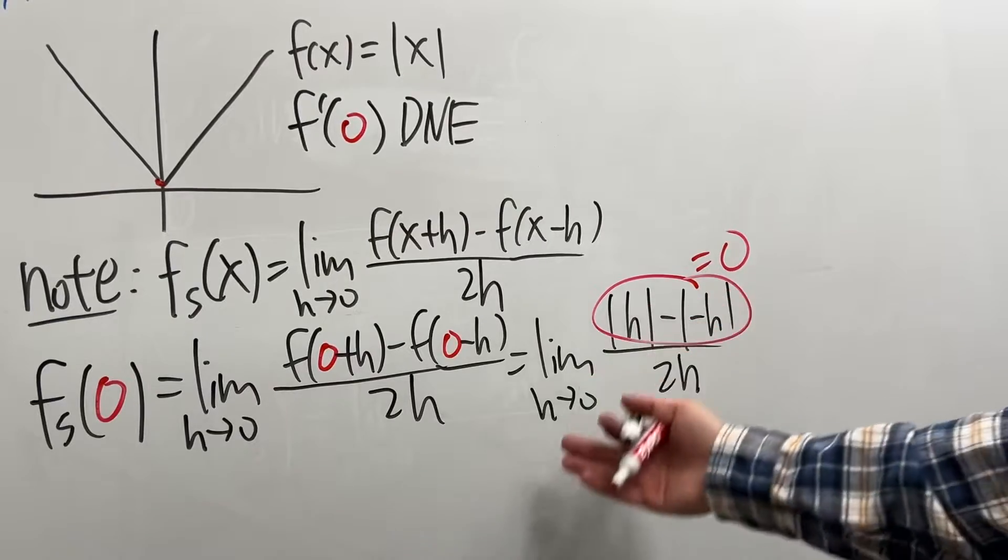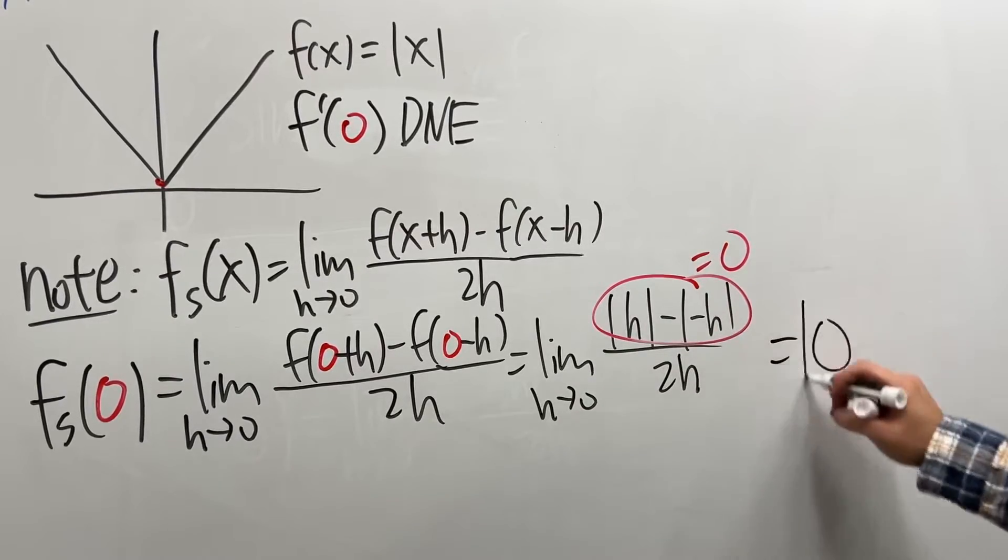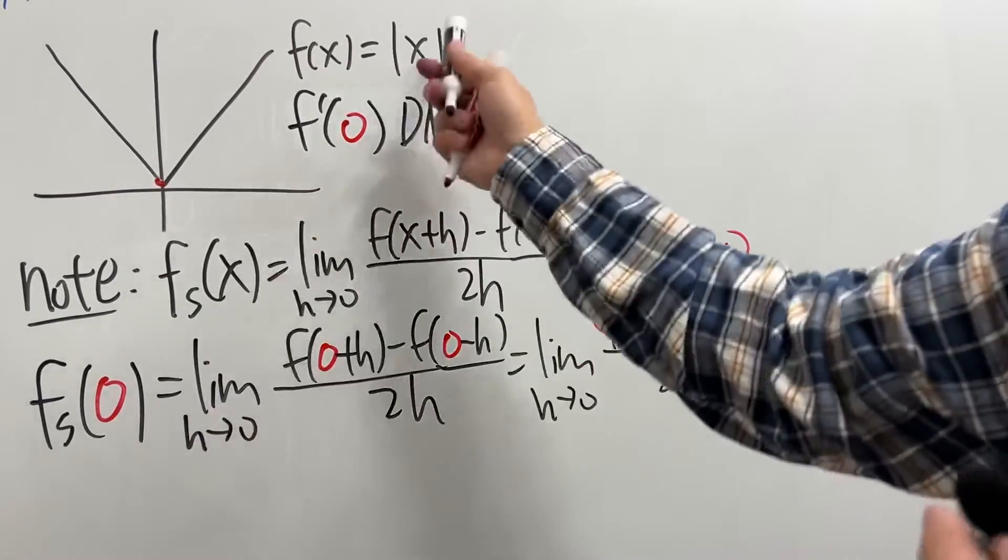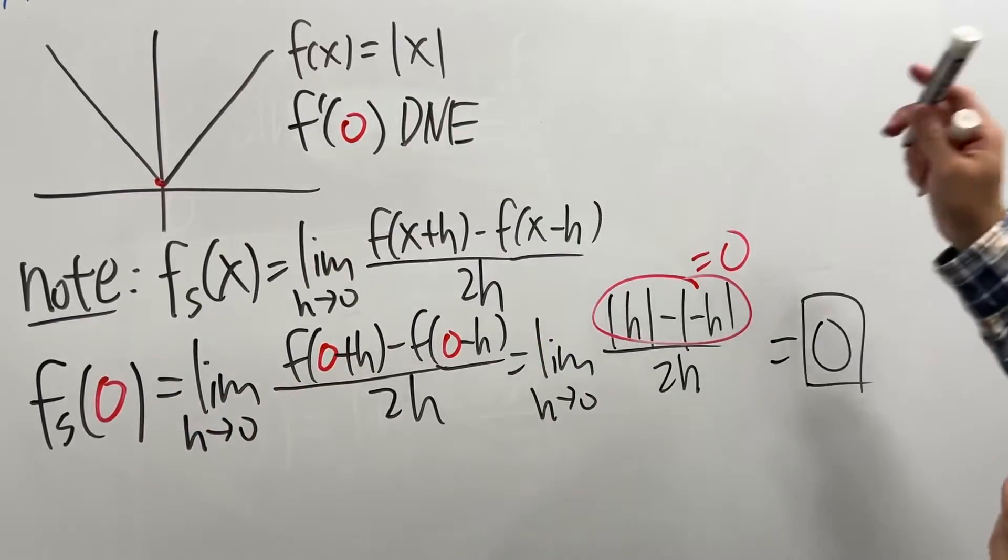0 over 2h is 0, limit of that is just equal to 0. So the symmetric derivative of absolute value of x at 0 is equal to 0.